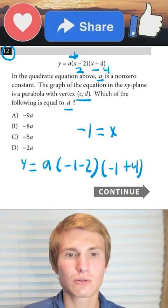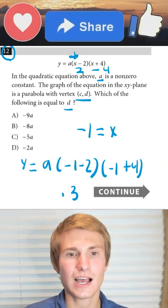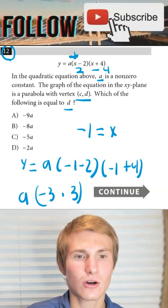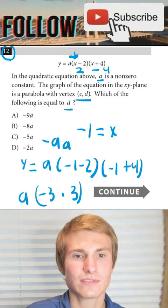Now negative 1 plus 4 we know will equal 3. So we'll have 3 times negative 1 minus 2, which will be negative 3. We know that that's going to equal negative 9 and that's all going to get multiplied by a. So my answer will be negative 9a.